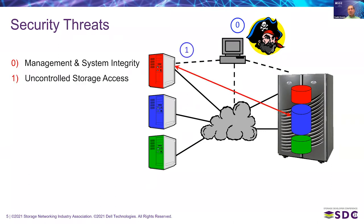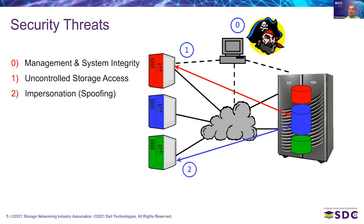Then we have uncontrolled storage access. The red host has some red storage which is associated with it, but the red host might try to access the blue storage. A variant of that is impersonation — the green host might declare itself to the storage as 'I am blue and not green,' in order to try to access the blue storage. That is another important security threat: impersonation.